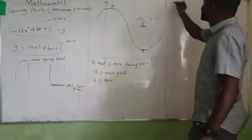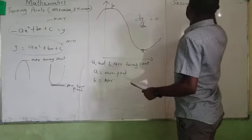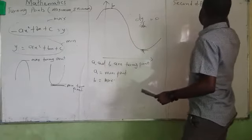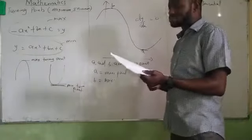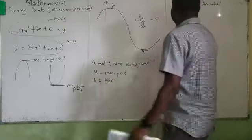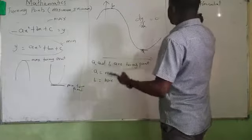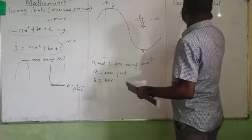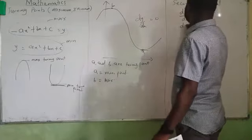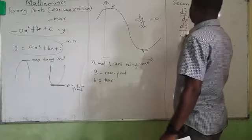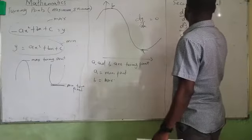You need to understand second differentiation. When you talk about the second derivative, it will tell you whether it is maximum or minimum. When my d²Y/dX² — the second derivative — is less than 0, it is maximum. When the second derivative is greater than 0, this is minimum.